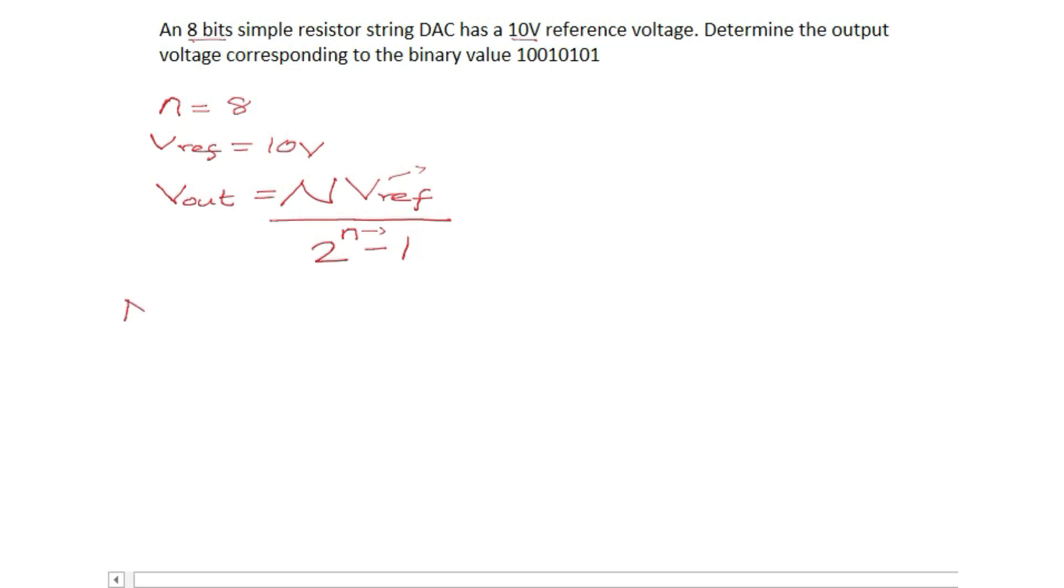Well the capital N is nothing but the decimal representation of the binary that is given. So all we need to do is take this binary value which we're given and convert it to decimal numbers.